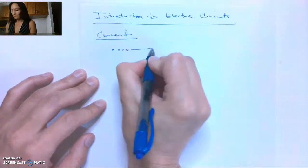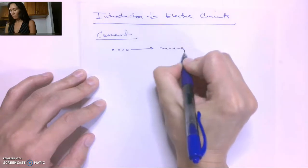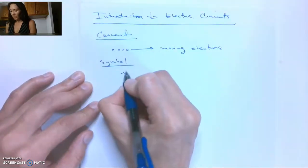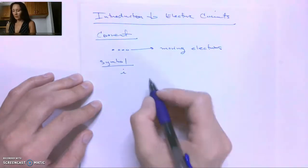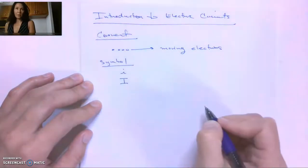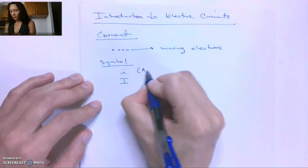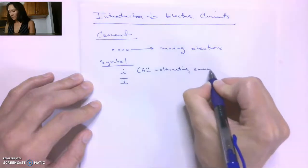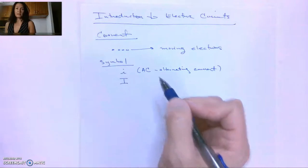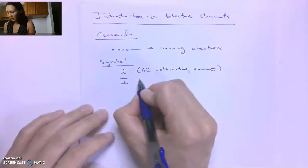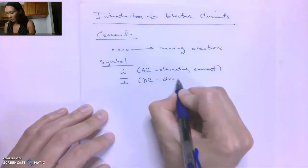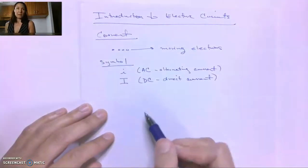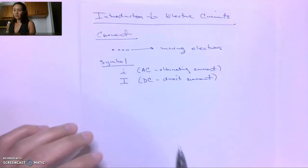So current is defined as moving electrons and the symbol that we're going to use for our calculations is this lowercase cursive i, and you might also see an uppercase i. When we're doing calculations with AC, so this is alternating current, they usually use this lowercase cursive i, but if we're doing calculations in DC, this is direct current. Direct current is constant in time, then you usually see this uppercase i. But the lowercase i is the more generic term, so this is one we'll use more often.